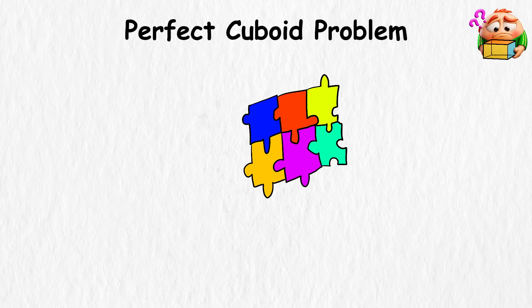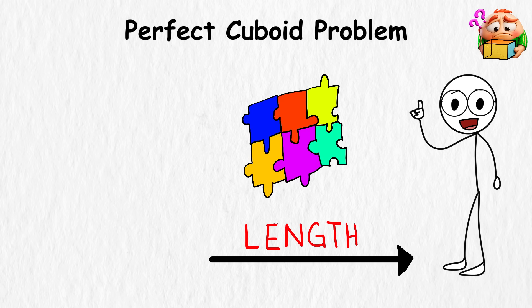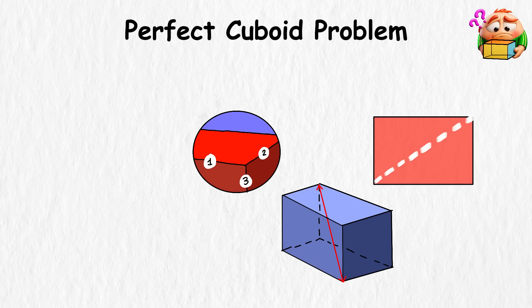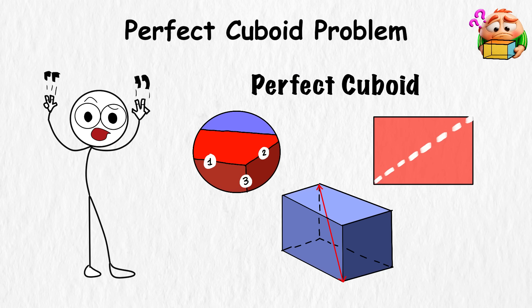Here's the puzzle. Could there be a box where every single one of those lengths is a whole number? The edges, the diagonals across the faces, and even that long space diagonal inside? A box like that would be called a perfect cuboid.